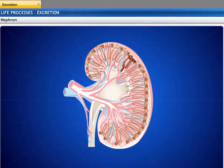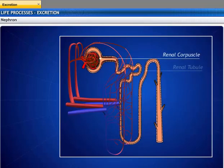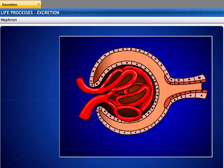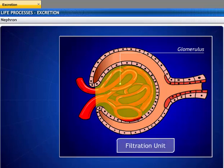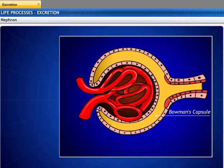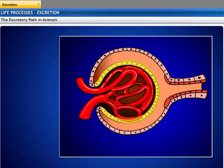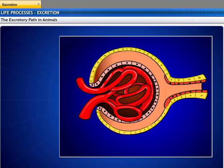Each kidney contains about 1 million nephrons. Each nephron consists of a corpuscle and a renal tubule. A corpuscle is composed of tangled clusters of tiny blood capillaries called the glomerulus, which is called the filtration unit. A thin-walled, sac-like structure called Bowman's capsule surrounds the glomerulus. The inner layer of Bowman's capsule covers the glomerulus, and the outer layer is continuous with the inner layer and with the wall of the renal tubule.